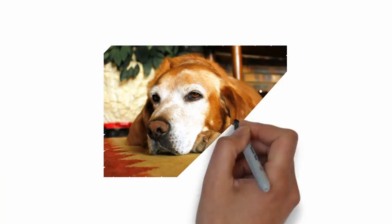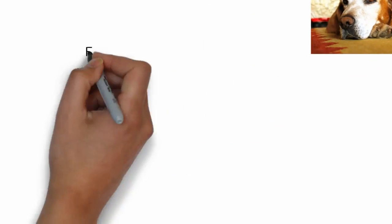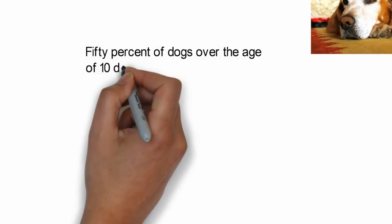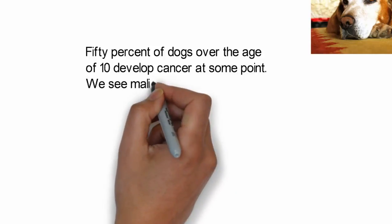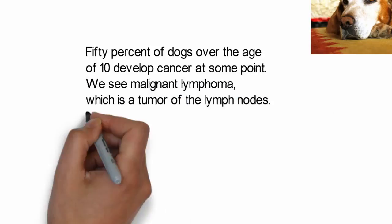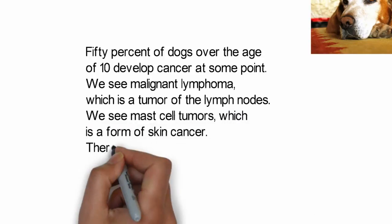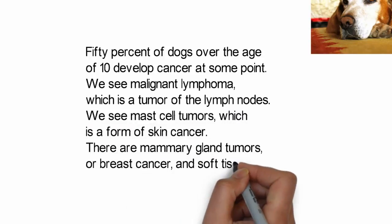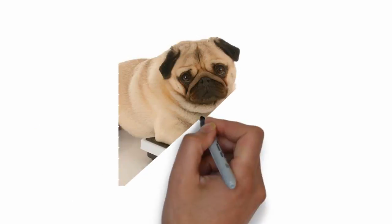1. Cancer. 50% of dogs over the age of 10 develop cancer at some point. We see malignant lymphoma, which is a tumor of the lymph nodes; mast cell tumors, which is a form of skin cancer; mammary gland tumors or breast cancer; and soft tissue sarcomas.